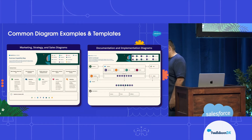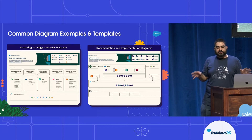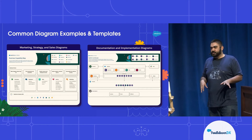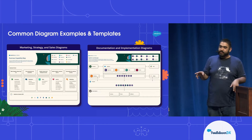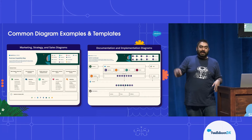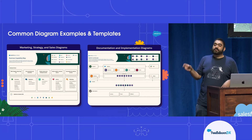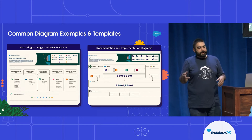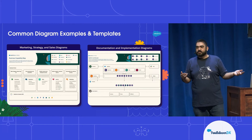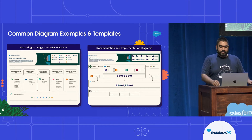The common diagrams we utilize from a best practice perspective include what we call marketing, strategy, and sales diagrams - think of these as the more business-level diagrams for your business stakeholders who need to understand the capabilities and functionality of whatever you're implementing. Then on the other side are documentation and implementation diagrams, or D&I diagrams, which are really focused on those technical stakeholders. Who here thinks they're mostly going to use the D&I diagrams versus the marketing, sales, and strategy diagrams? You're probably wrong - you probably use both equally.